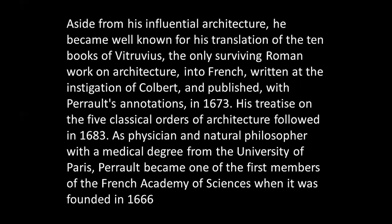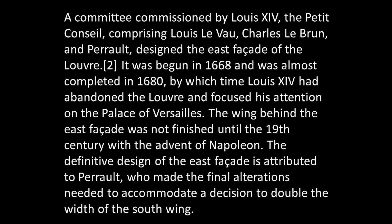Aside from his influential architecture, Claude Perrault became well known for his translation of the Ten Books of Vitruvius — the only surviving Roman work on architecture — into French. Written at the instigation of Colbert and published with Perrault's annotations in 1673, his treatise on the five classical orders of architecture followed in 1683. As a physician and natural philosopher with a medical degree from the University of Paris, Perrault became one of the first members of the French Academy of Sciences when it was founded in 1666.